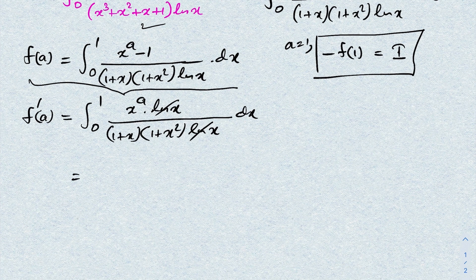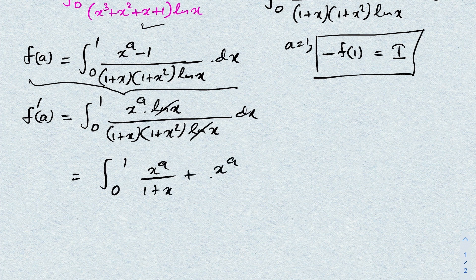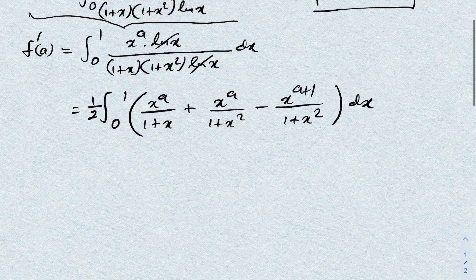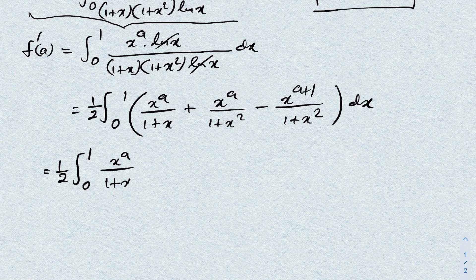We simplify f'(a): the integral from 0 to 1 of x^a over (1 + x)(1 + x²) dx. Using partial fraction decomposition, this splits into the integral of x^a over (1 + x), plus x^a over (1 + x²), minus x^(a+1) over (1 + x²), with an overall factor of one half. We then split this into three separate integrals.